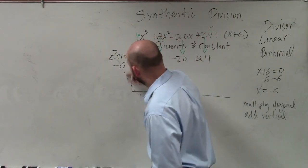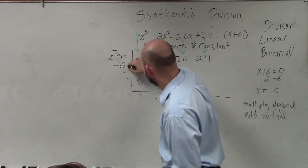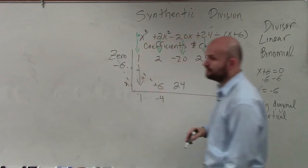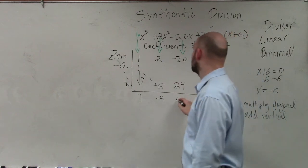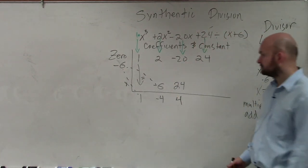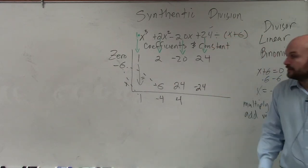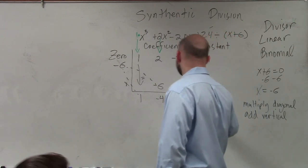You multiply diagonal, 1 times negative 6, you multiply diagonal, and you add vertically. Negative 20 plus 24 is positive 4. Positive 4 times negative 6 is negative 24. Nick, I'm just taking one off from you. Negative 24 plus 24 is 0. That's perfectly fine, man.